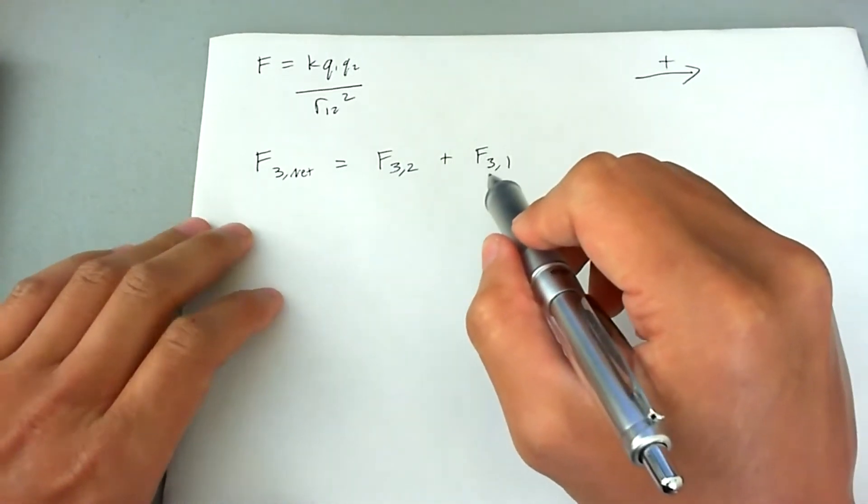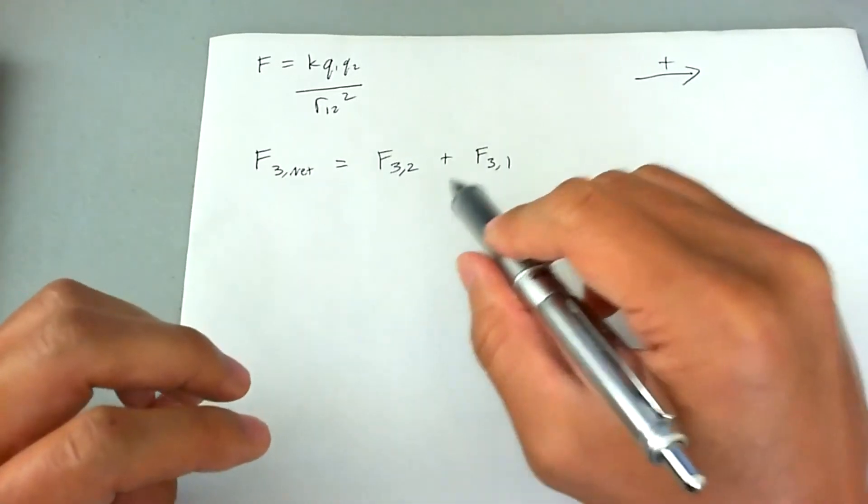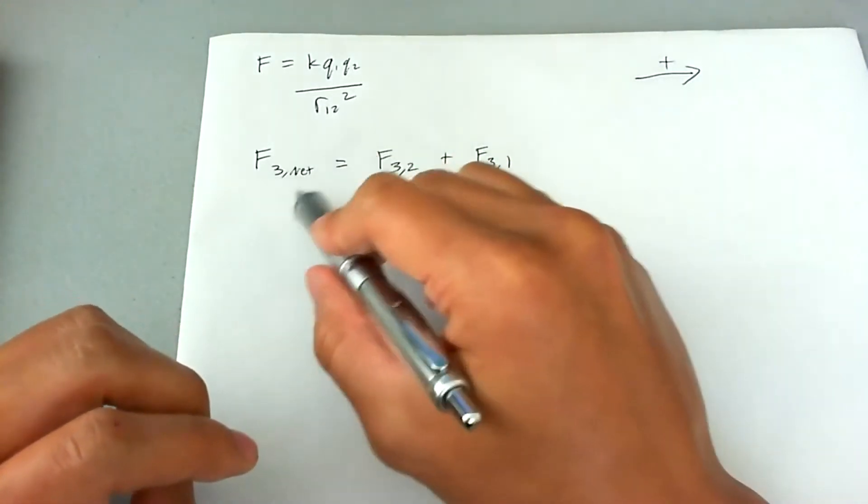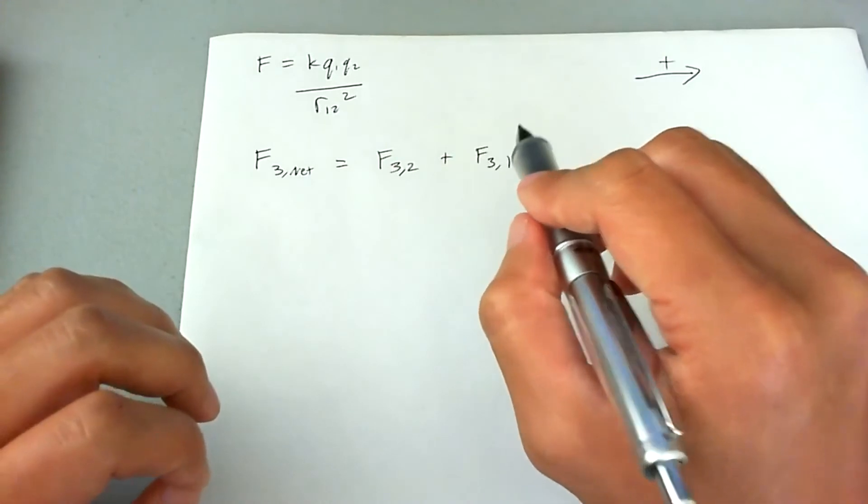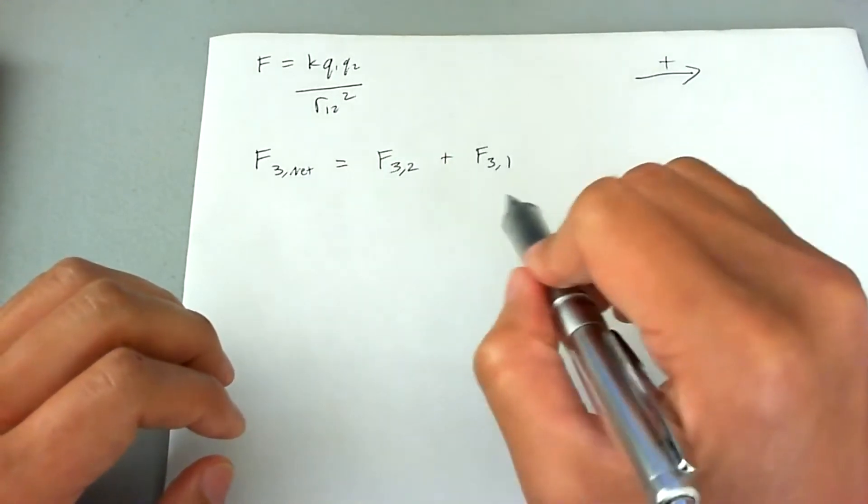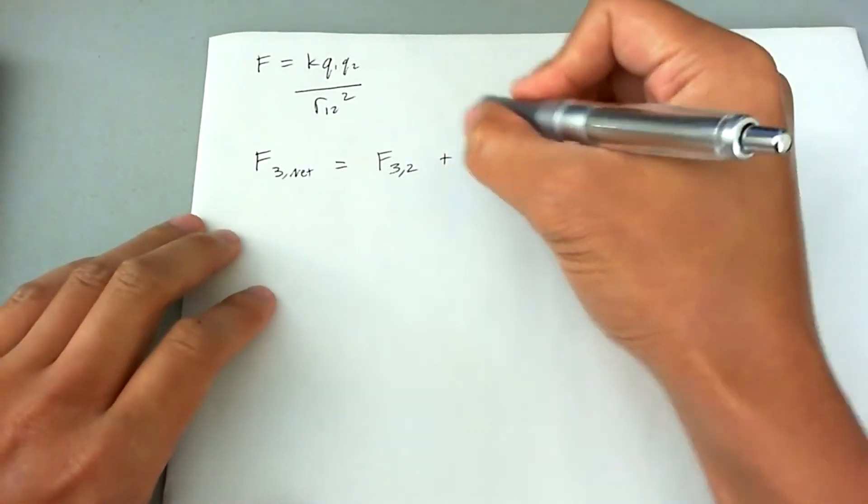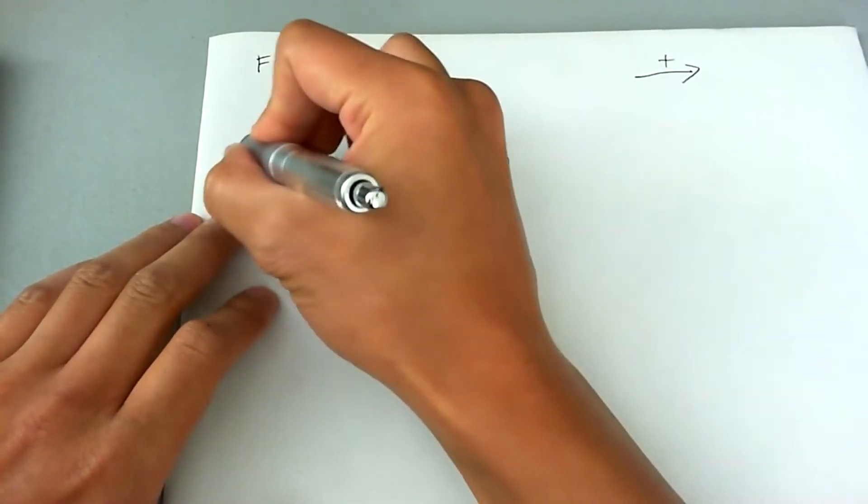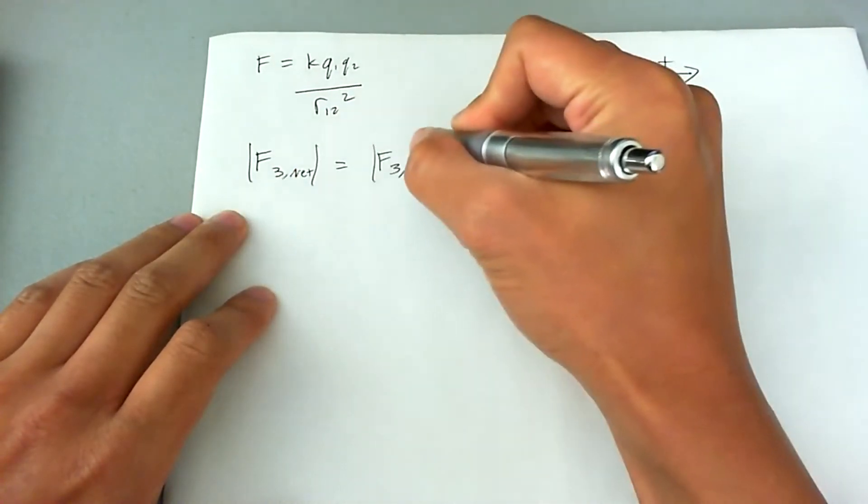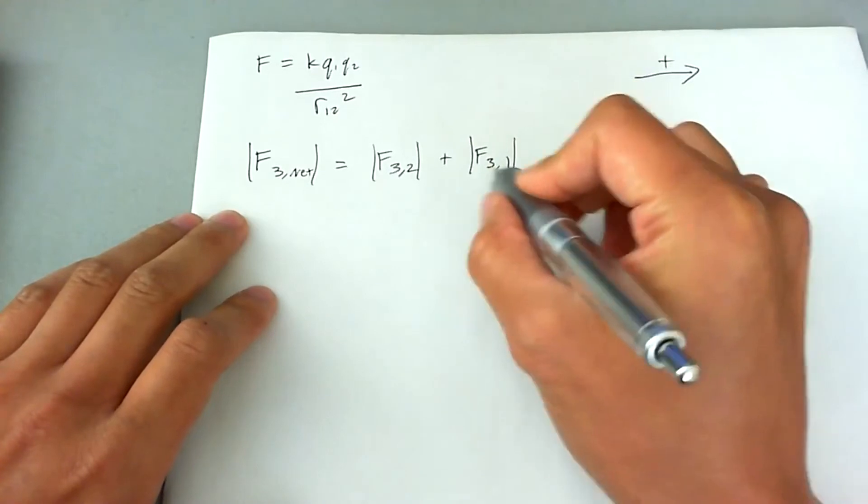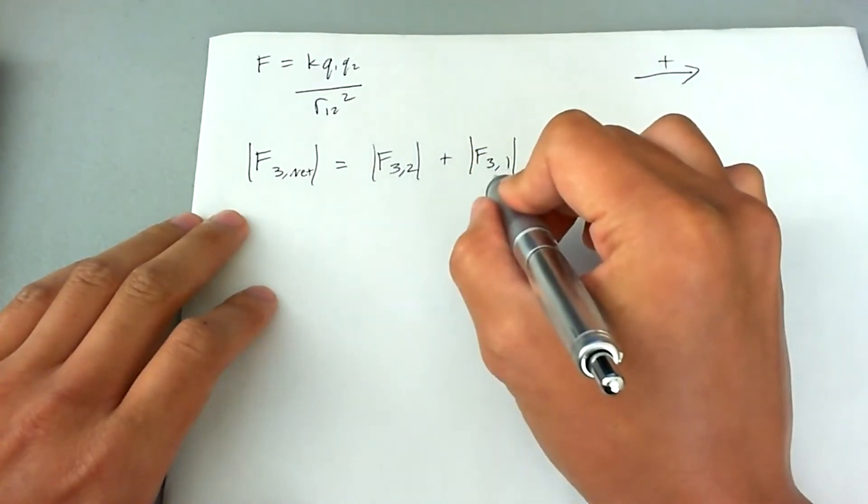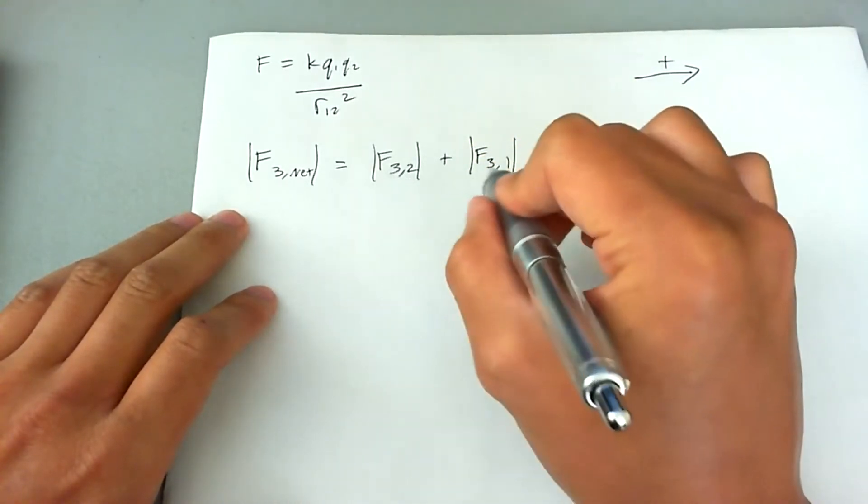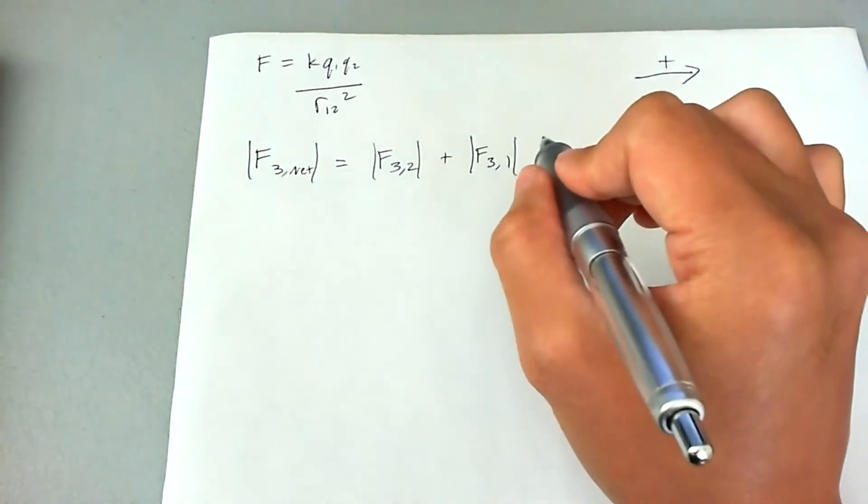So since the first charge is negative with the third charge, and we're looking at the third charge, we know that the third charge is going to go to the right because of charge one. So what I'm going to do is I'm actually going to put all of these in absolute value brackets. So whatever happens, these have to be positive. That means that we have complete control over the sign convention.